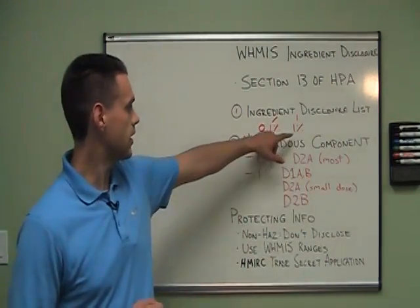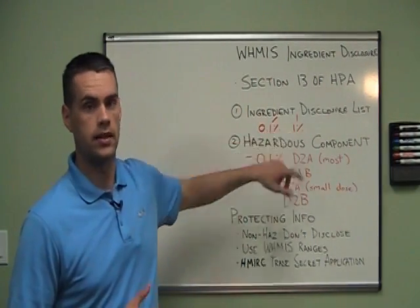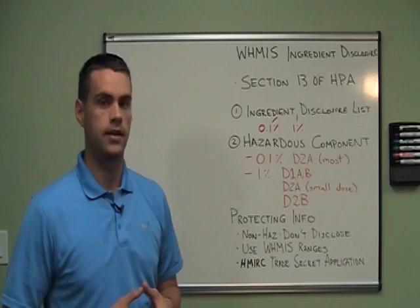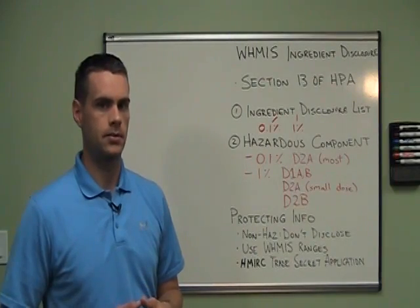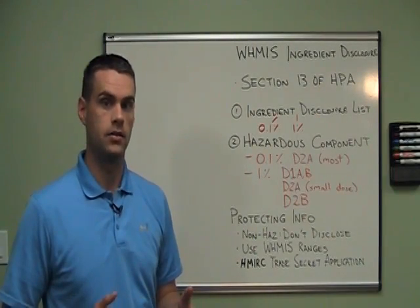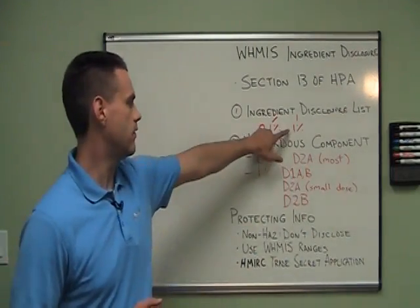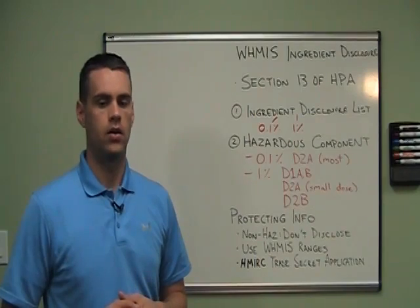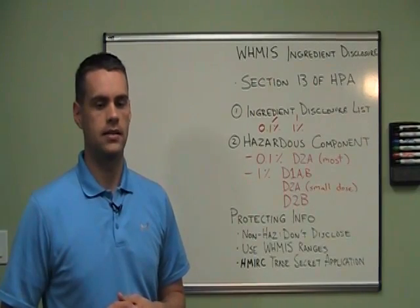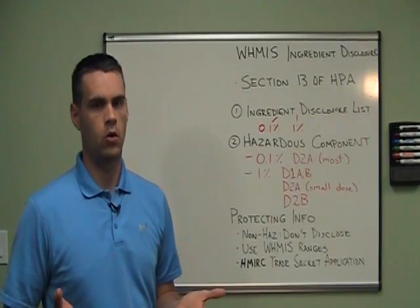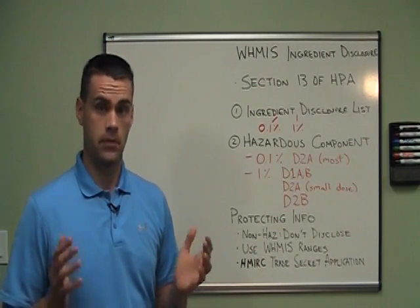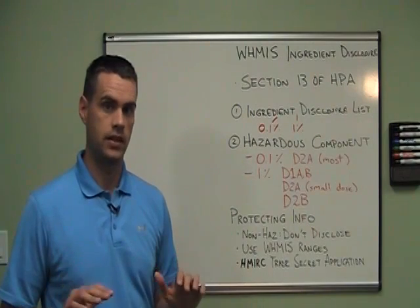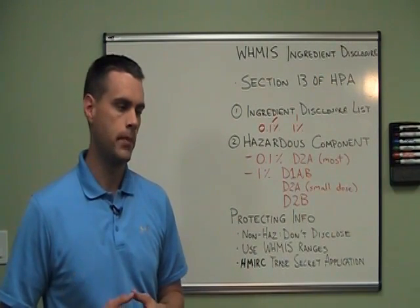Similarly, we have a 1% disclosure limit for other ingredients. For example, acetone has an IDL value of 1%. So if acetone makes up 1% or more of your mixture, you need to disclose that ingredient. If it's less than 1%, you do not.